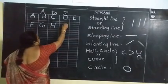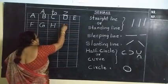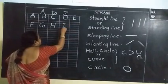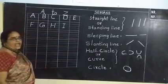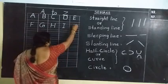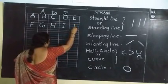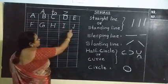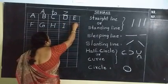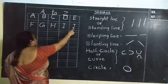Capital H after capital I. Capital I is very easy to write. One straight line, with a sleeping line on the red line and another sleeping line on the last blue line. That makes capital I. Capital I after J. For J: draw a straight line and a small curve at the bottom, with a sleeping line at the top. That makes capital J.